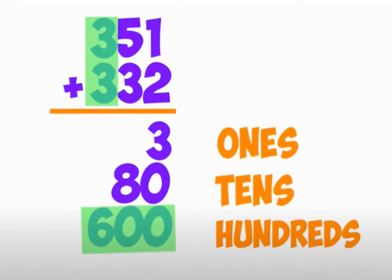Here is another example. Look at the picture: 351 plus 332. First, add the hundreds. Look at the first addend — we have 300. And the second addend, 300. So 300 plus 300 equals 600.